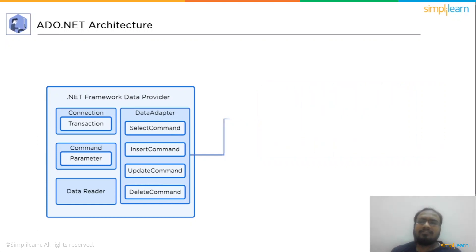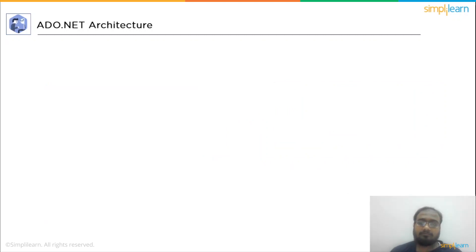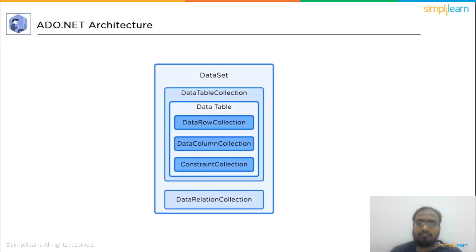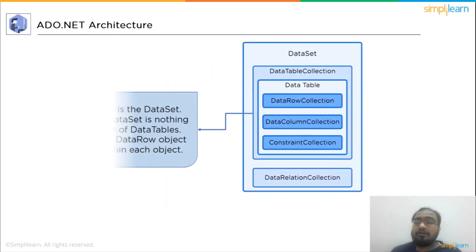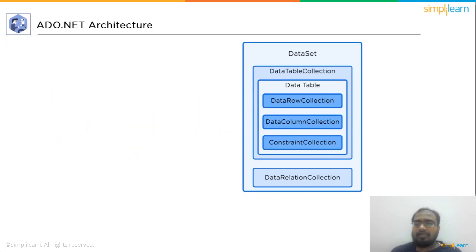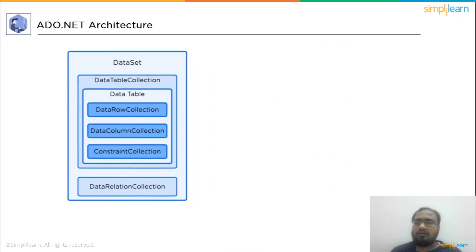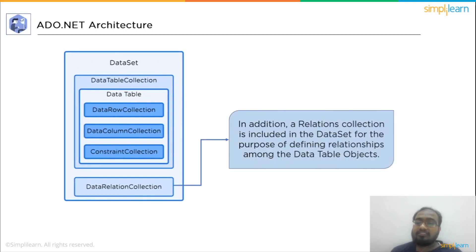Now let's address the next part of the ADO.NET architecture: the dataset. A dataset comprises a data table collection and a data relation collection. The dataset is the heart of ADO.NET — it is a collection of data table objects, each of which contains collections of data column and data row objects. The dataset additionally has a relation collection for defining relationships between data tables.